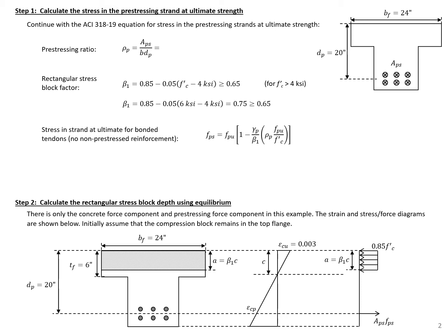Next we need to find our prestressing ratio. Our prestressing ratio is going to be the ratio of our total prestress area divided by b — the width of our compression face, which in this case is b sub f of 24 inches — times d sub p, the distance from the compression fiber to the centroid of all of our strands. We have two layers of strands, but we're given the centroid of those two layers equal to 20 inches. Plugging in our values: 0.918 square inches divided by 24 times 20 gives us a prestressing ratio of 0.00191.